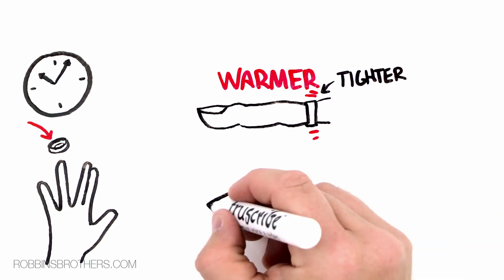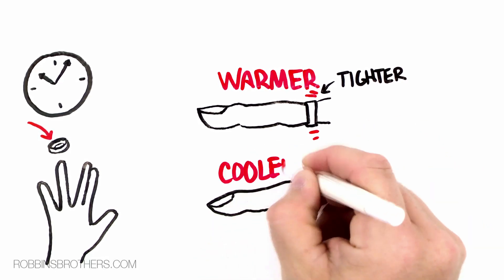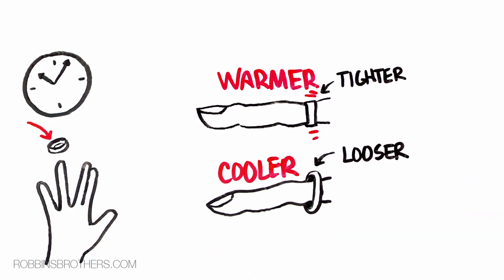In cooler temperatures, your finger tends to contract a little bit, and so the ring may feel a little looser and not as snug.